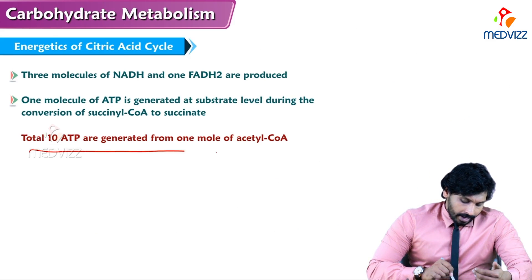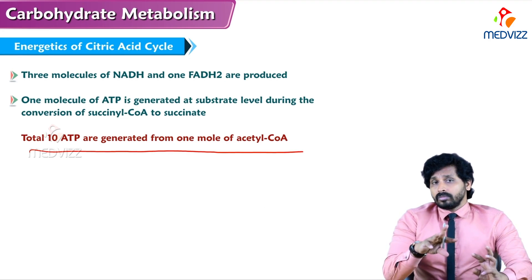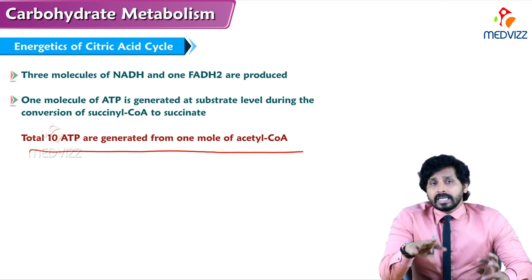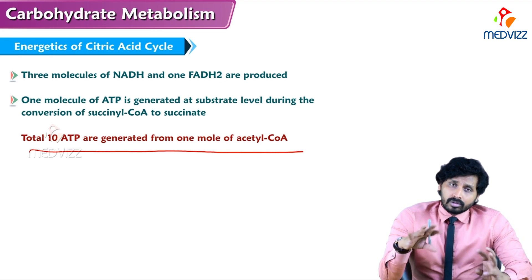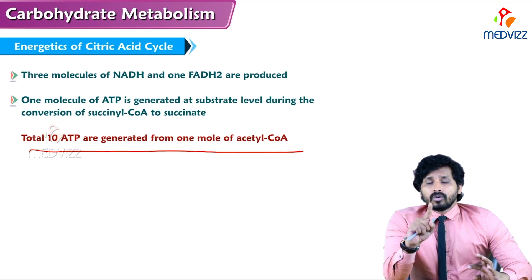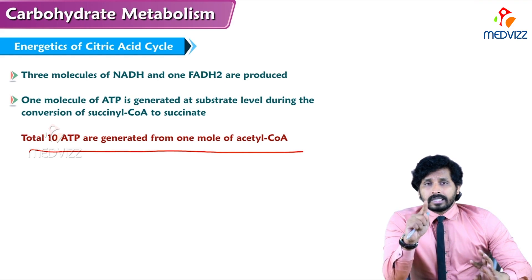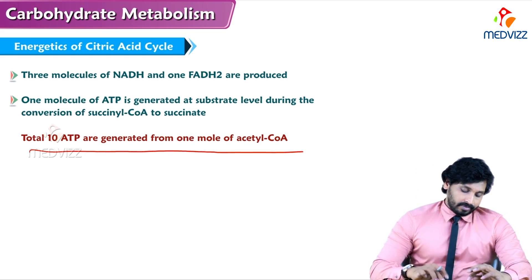Total 10 ATPs are generated from one molecule of acetyl-CoA. In competitive and theory exams, questions may be twisted: one molecule of glucose undergoing TCA cycle produces 20 ATPs, while one acetyl-CoA produces 10 ATPs.